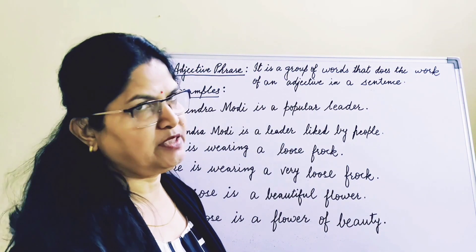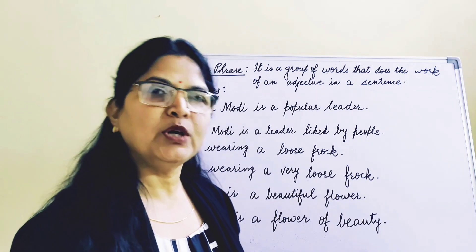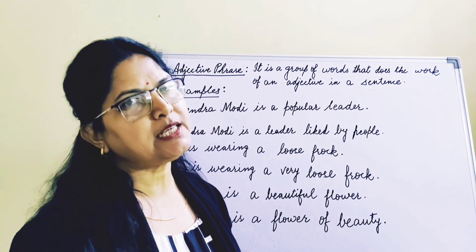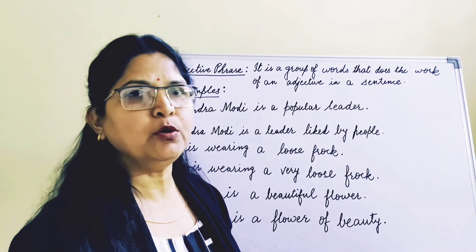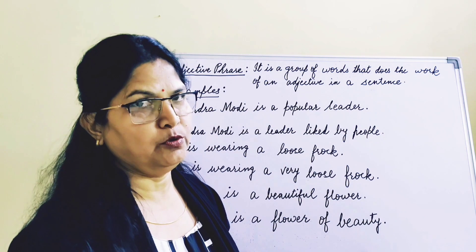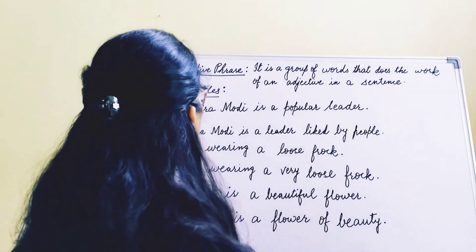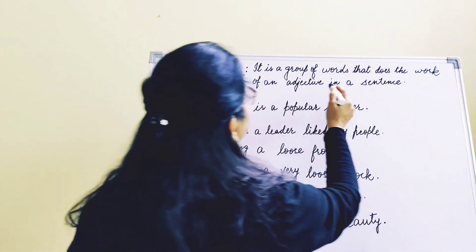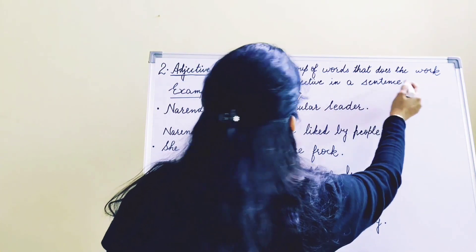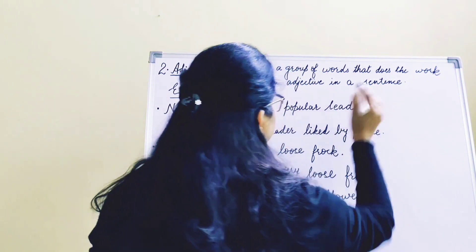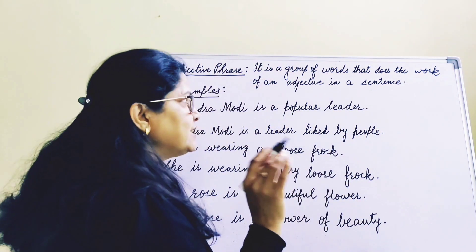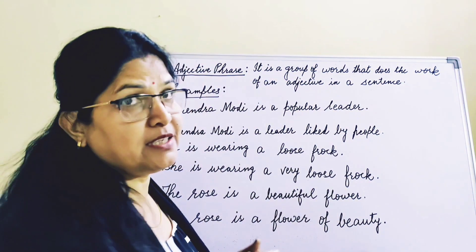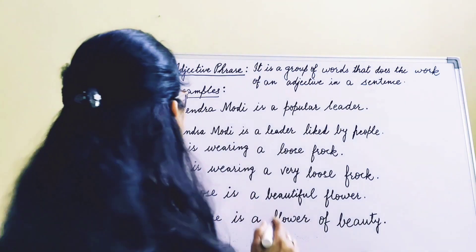Now let's see the second type — that is adjective phrase. What is an adjective? An adjective is a word which tells us about a noun. So, what is an adjective phrase? It is a group of words that does the work of an adjective in a sentence. Let us see some examples and then you will understand it better.